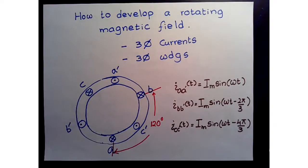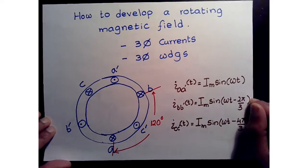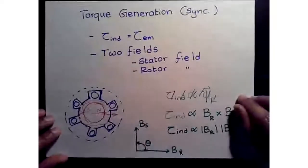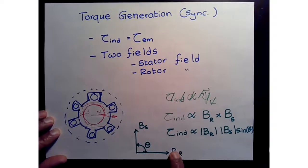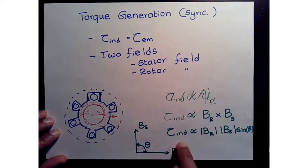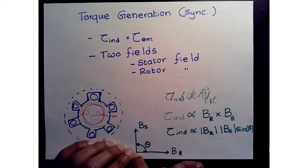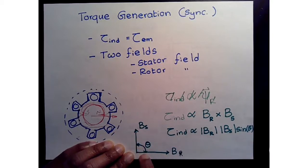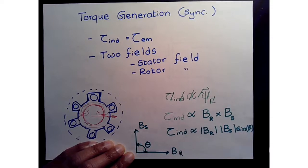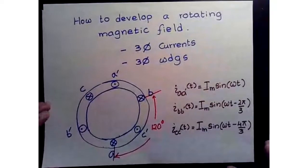Welcome to the second part of our AC machines discussion on underlying physics, primarily the rotating magnetic field within an AC machine. Last time in the previous video we talked about torque generation and how the flux density of the stator and the flux density of the rotor interact in generating induced torque. There's an angle relationship we need to consider — these vectors need to be at 90 degrees of each other, which gives you maximum torque for that configuration.